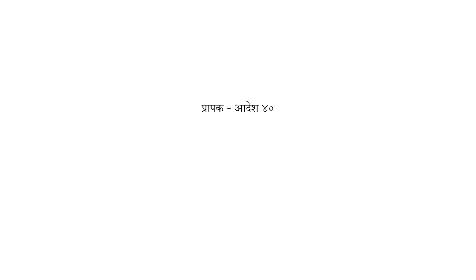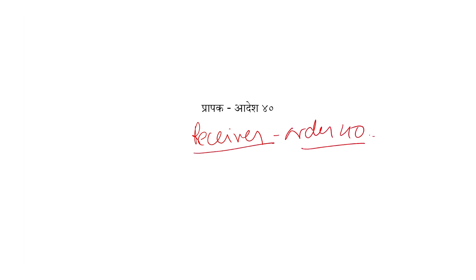Let's go to the next module: Receiver, Order 40. Receiver is also an interim order.